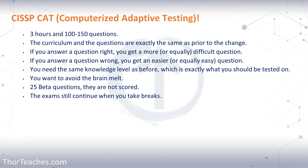On the exam, you're going to get 25 beta questions. They don't count towards your score — they are only used by ISC² to see how well they perform, and they may include them in future tests. If you get them right or wrong, it doesn't matter. So let's say you pass on question 100; out of those 100, 25 are beta questions. So really you only needed to answer 75 questions, or enough weighted questions right out of those 75, to pass the exam.